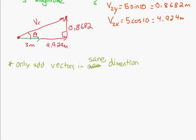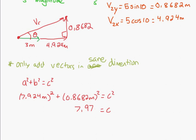And so what you're going to do is basically to solve for vr, you're going to use Pythagoras. So a squared plus b squared equals c squared. So a and b are the two sides of the right-angled triangle. And so a will be 7.924 meters squared plus b, which is the other side, 0.8682 meters squared equals c squared. And so if you solve that, you should get c is equal to 7.97 meters.